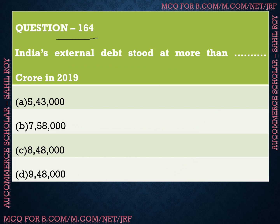Question number 164: India's external debt stood at more than dash crore in 2019. We have four options: Option A is more than 5,43,000 crore, Option B is more than 7,58,000 crore, Option C is more than 8,48,000 crore, and Option D is more than 9,48,000 crore. The correct answer is Option A — India's external debt stood at more than 5,43,000 crore in 2019.